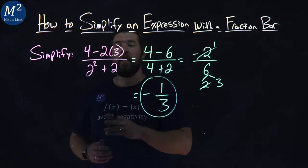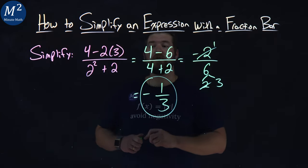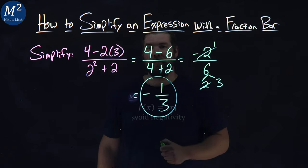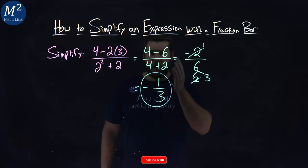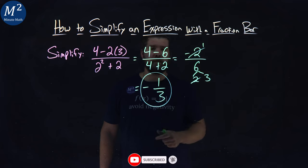And there we have it. 4 minus 2 times 3 over 2 squared plus 2 is negative 1 third. I hope you learned something here about how to simplify an expression with a fraction bar.